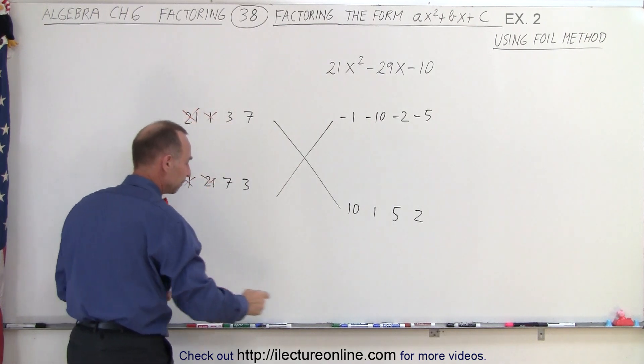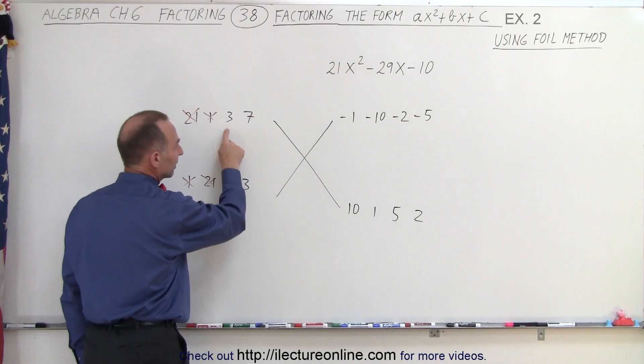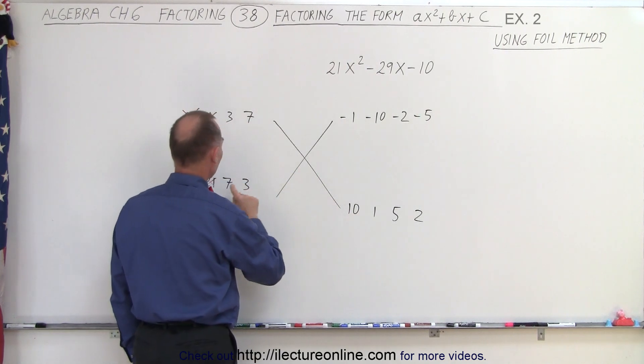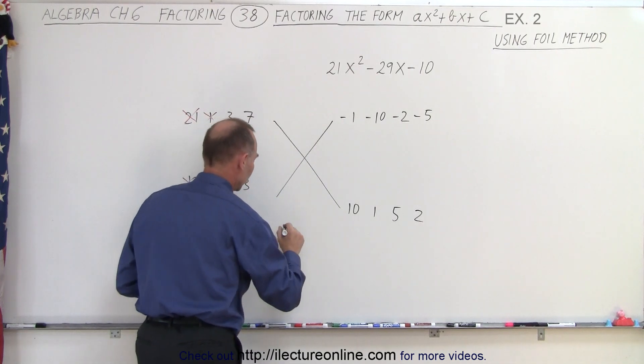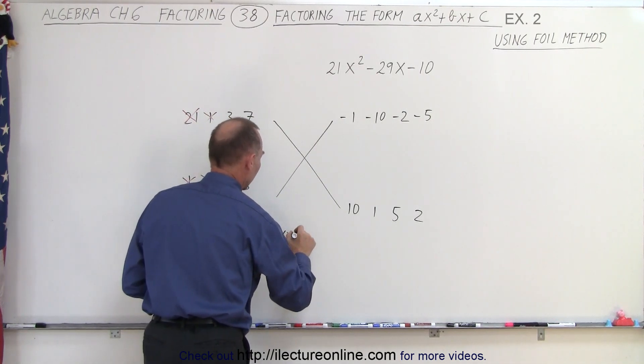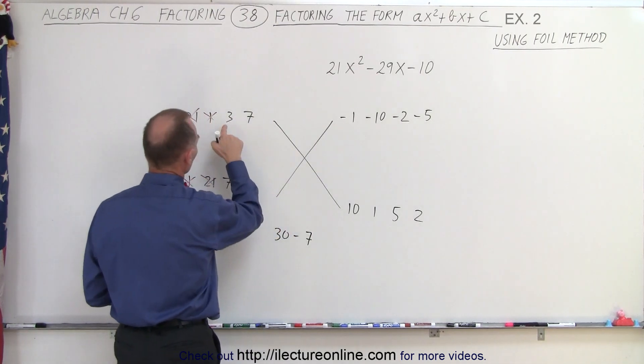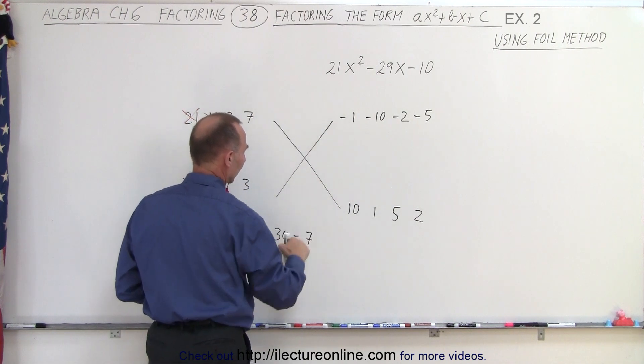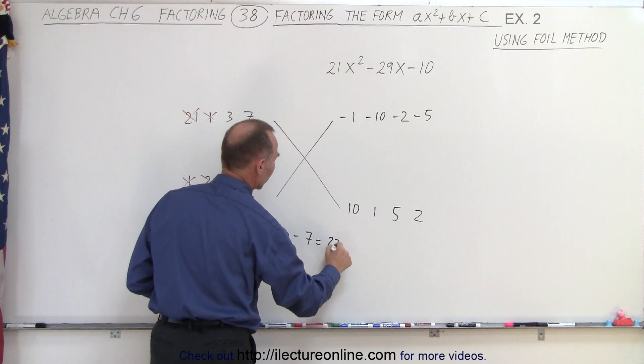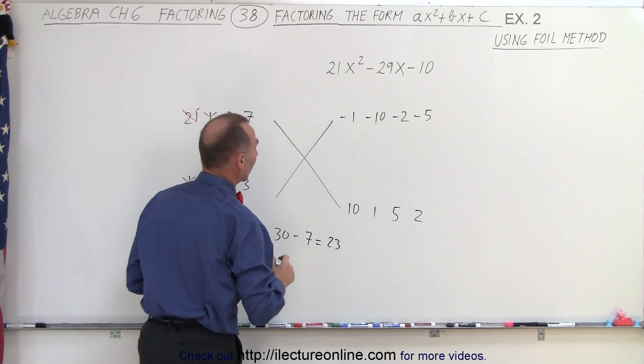How about what's remaining? So 3 times 10 gives us 30, and 7 times negative 1 gives us negative 7. Let's try that. So we have 30 and minus 7. 3 times 10 is 30, 7 times negative 1 is negative 7. That gives us positive 23. That doesn't give us the right combination.